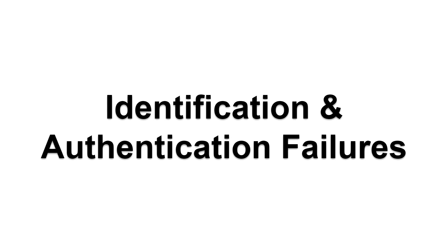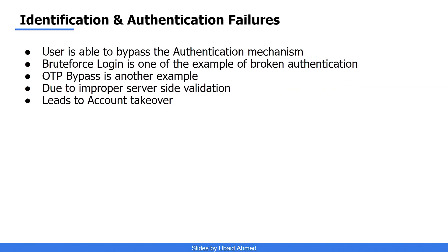The OWASP Top 10 is a standard awareness document for developers and web application security. At regular intervals, a list of vulnerabilities is published — basically these are the categories in which vulnerabilities can be divided. Identification and authentication failures is the category for those vulnerabilities where it is possible to compromise the authentication mechanism of an application, or it is possible to log in without having access to the password or OTP.